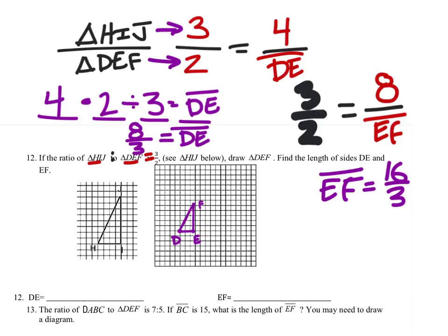The final thing I must do is write my answers where the answers go. The length of DE was 8 thirds, and the length of EF was 16 thirds.